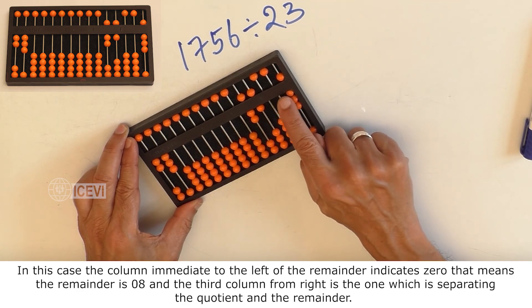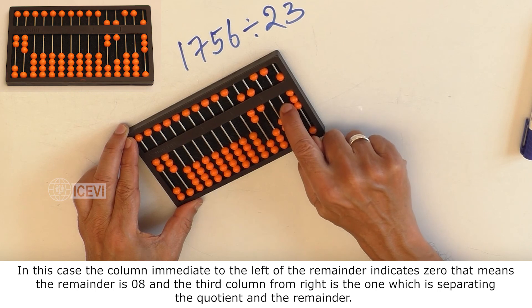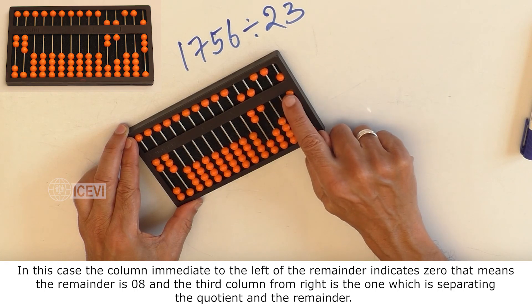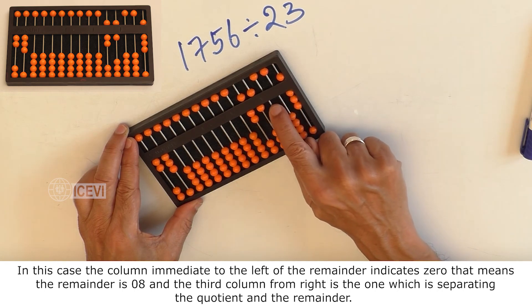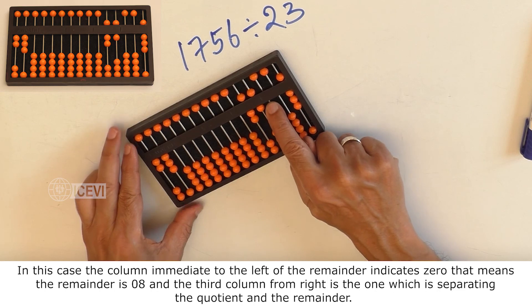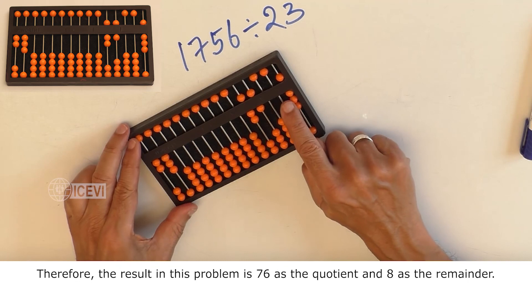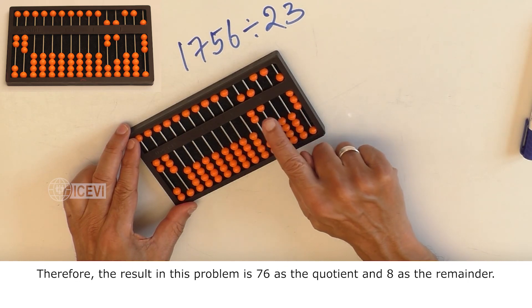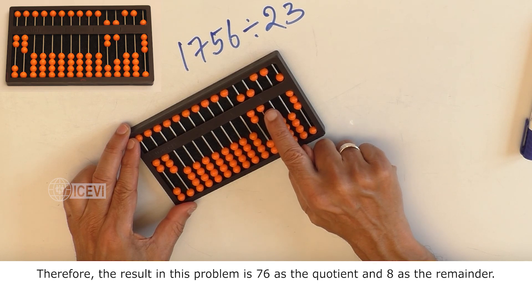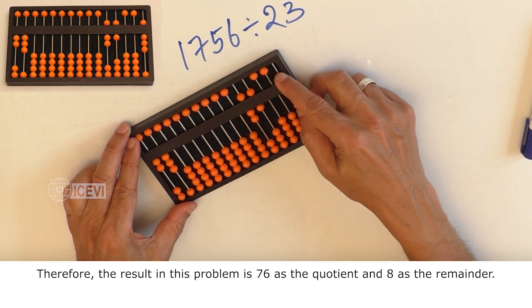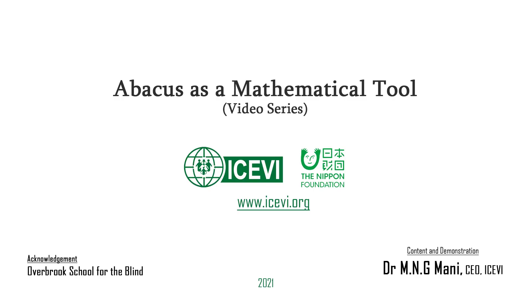In this case, the column immediate to the left of the remainder indicates 0. That means the remainder is 08 and the third column from the right is the one which is separating the quotient and the remainder. Therefore, the result in this problem is 76 as the quotient and 8 as the remainder.